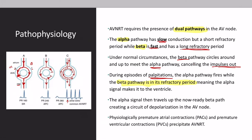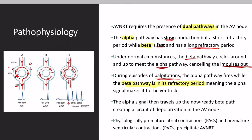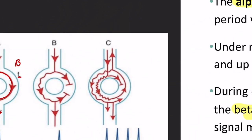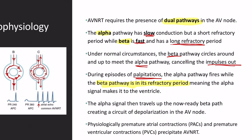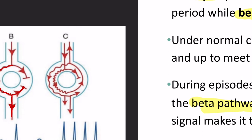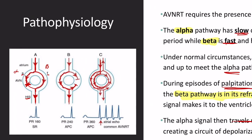This means the alpha pathway can reach the ventricles and the signal travels up the other side. The alpha signal can then travel up the beta pathway, creating a circuit of depolarization in the AV node. You can see this circular loop forming — it activates the bundle of His anterogradely and the atria retrogradely. This short cycle length is responsible for the rapid heart rate seen with AVNRT, and this is the most common type of reentrant circuit, termed slow-fast AVNRT.